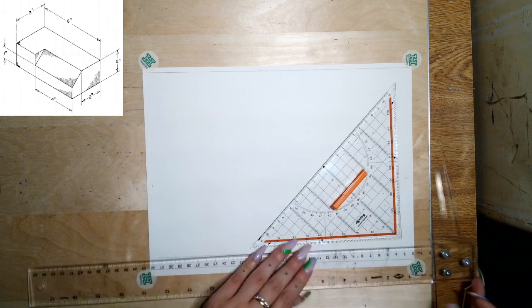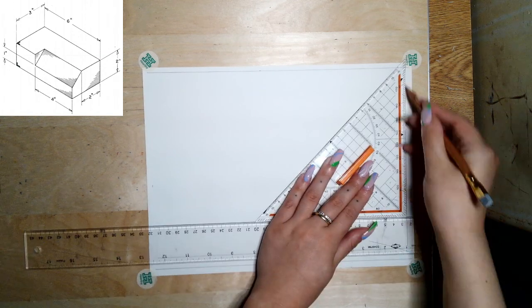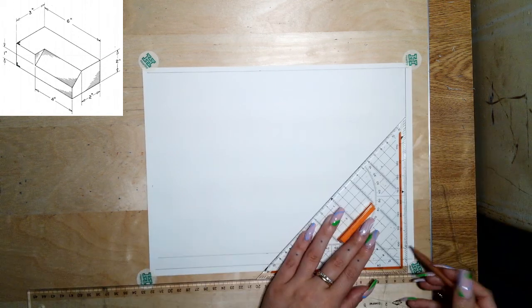Of course, using our triangle with our T-square to do our vertical lines.